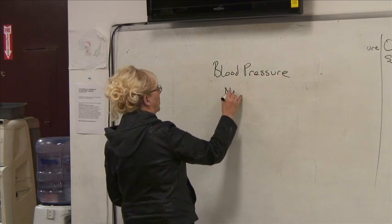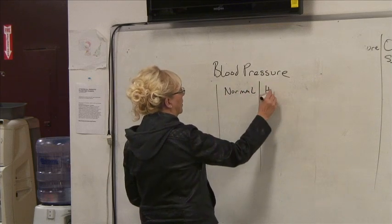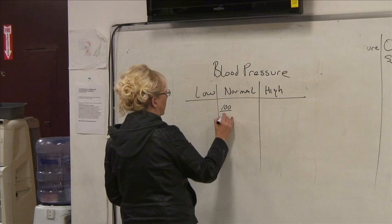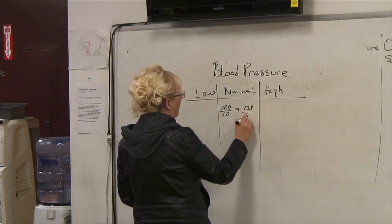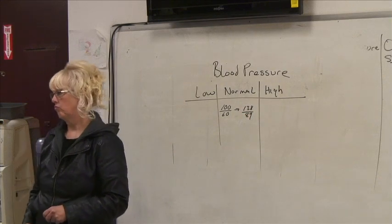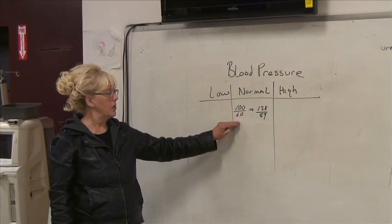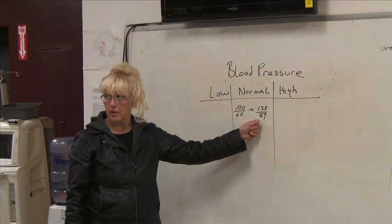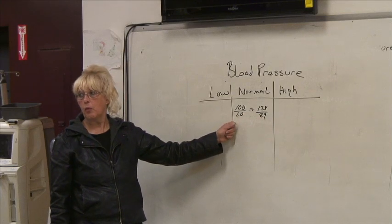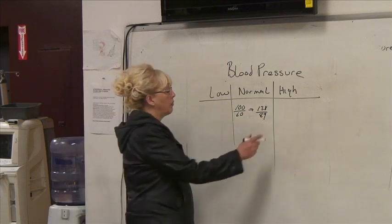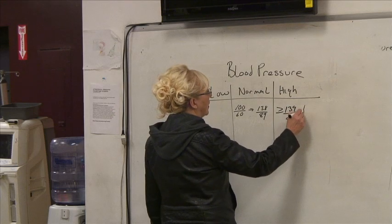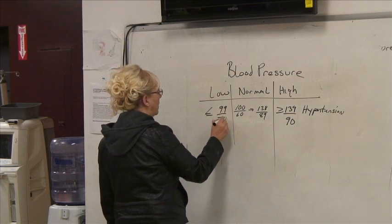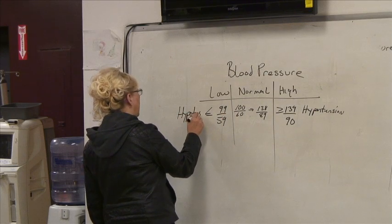Now let's look at blood pressure. Blood pressure has a wide range of normals — from 100/60 all the way to 138/89. Greater than or equal to 139/90 is hypertension. Less than or equal to 99/59 is hypotension.